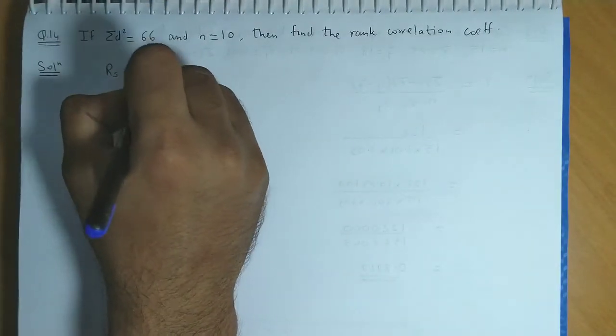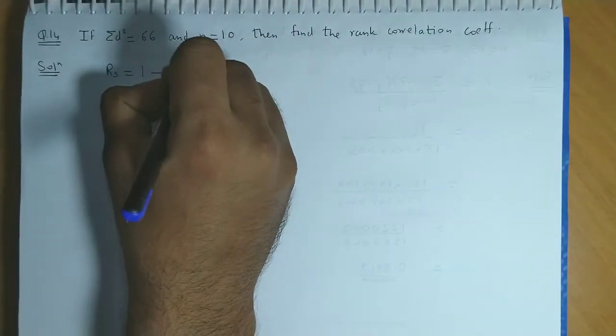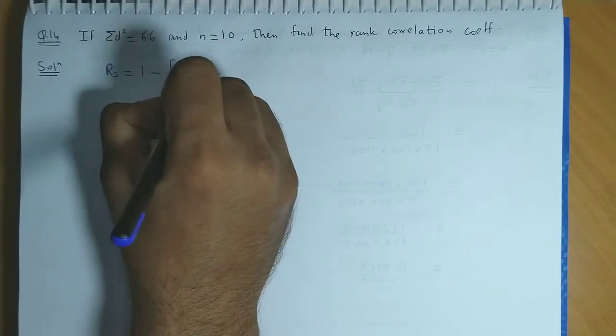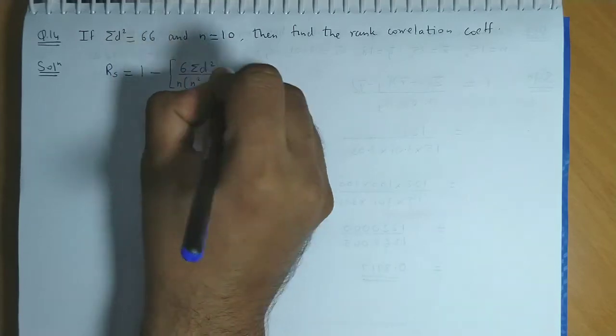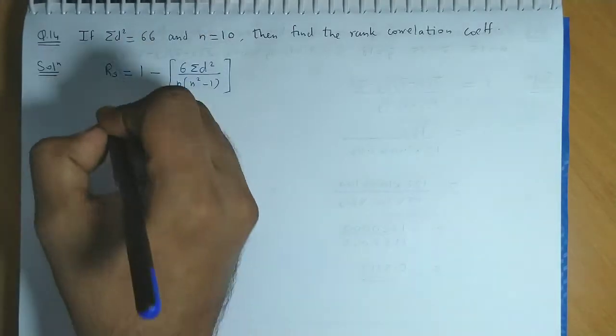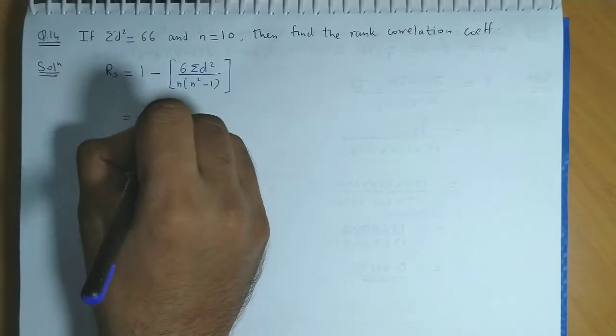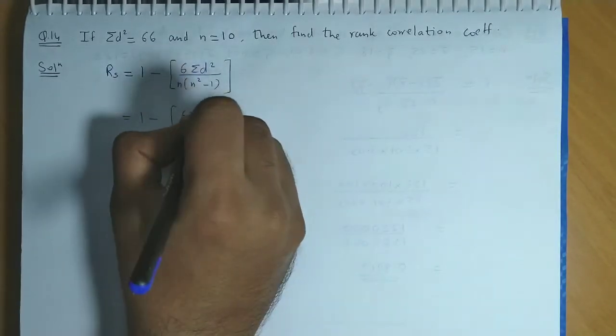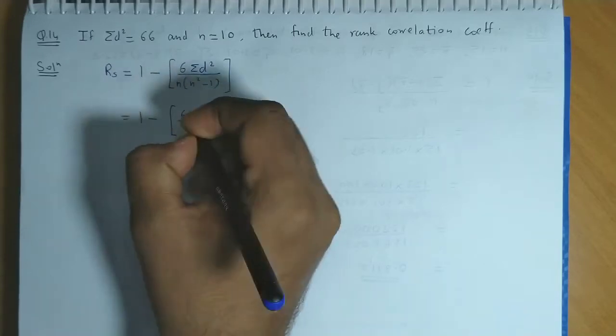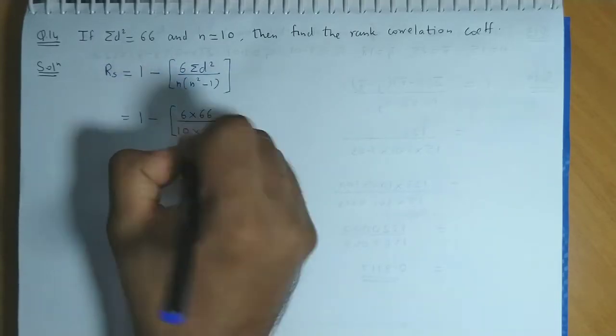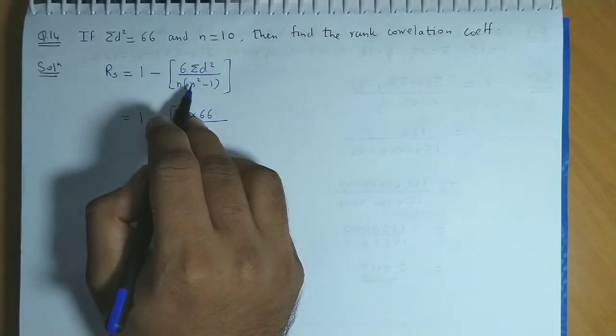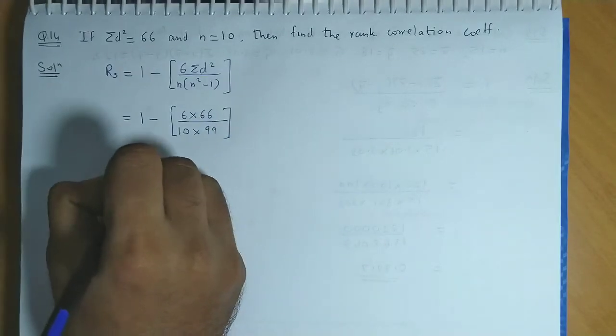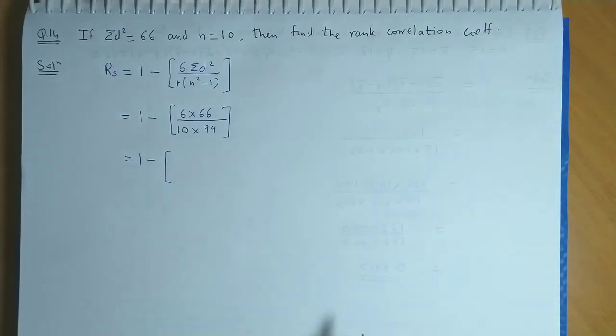The formula is 1 minus 6 times summation of d square upon n into n square minus 1. So if we substitute the values, we would obtain 6 times summation d square is 66, n is 10. Now 10 square is 100 minus 1, that becomes 99.